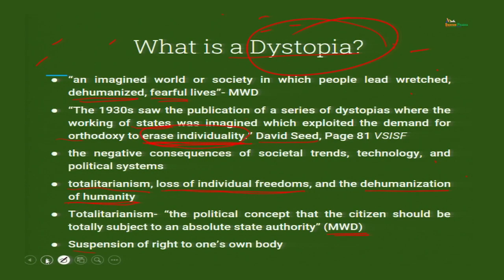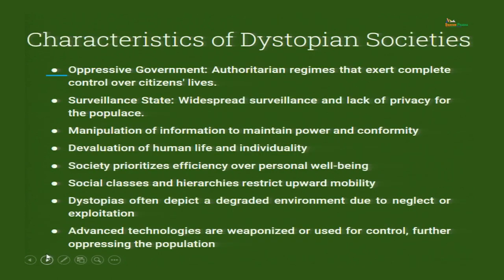These are the situations that we face in dystopian societies. Here is a brief outline of the characteristics of dystopian societies. First: oppressive government. Oppression is when the government is forcibly applying force and telling us what to do. The government is oppressing us.